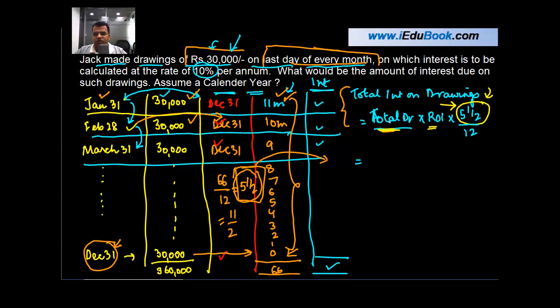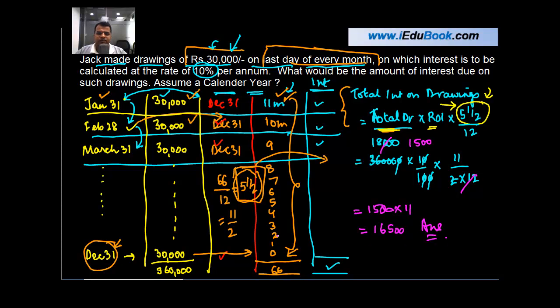How much is the total drawings? Thirty thousand into twelve, or three lakh sixty thousand, into rate of interest ten percent, into five and a half, which is eleven upon two, into twelve. This will give you eighteen thousand, and then fifteen hundred into eleven, or sixteen thousand five hundred, which is your answer. This was fairly simple, no rocket science, just apply this formula and you get the interest on drawings.